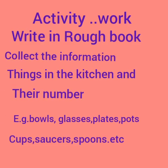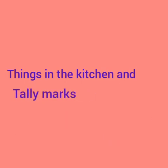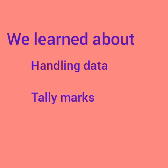Students, I am giving you one activity for practice — do this in your rough book only. Count things in your kitchen: for example, bowls, glasses, plates, pots, cups, saucers, spoons, etc. Make a table with three columns: things in the kitchen, tally marks, and number of things. I hope you understood about handling data and tally marks. In the next part of this video, we will continue with more information and assignments. Thank you, we will meet again.